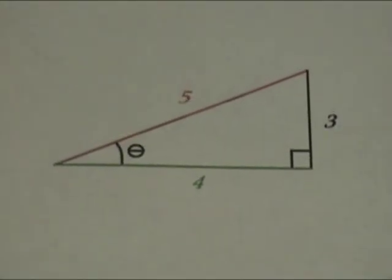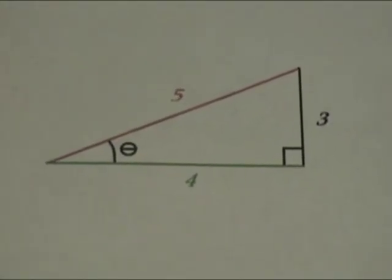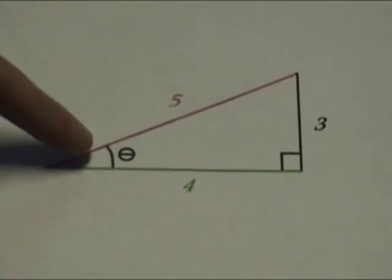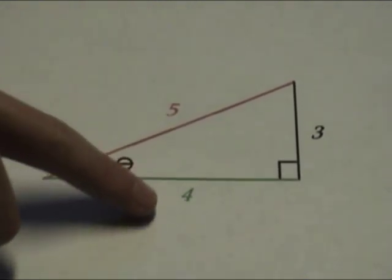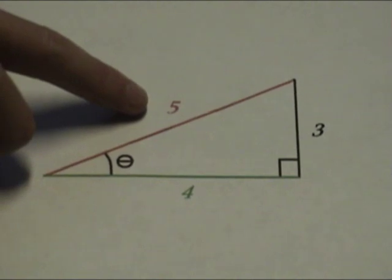An example of how to find the cosine of this angle would be: look for your angle, find the adjacent side length, and put that over your hypotenuse side length to get your answer.